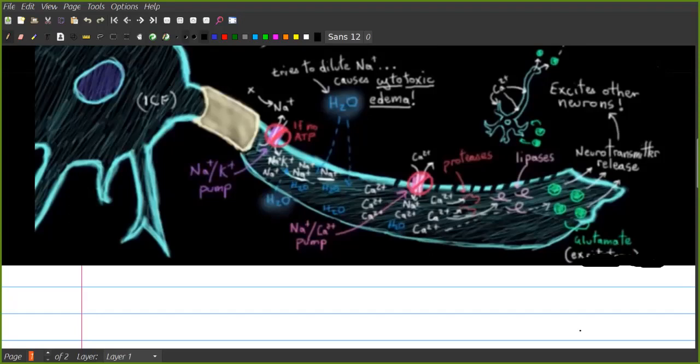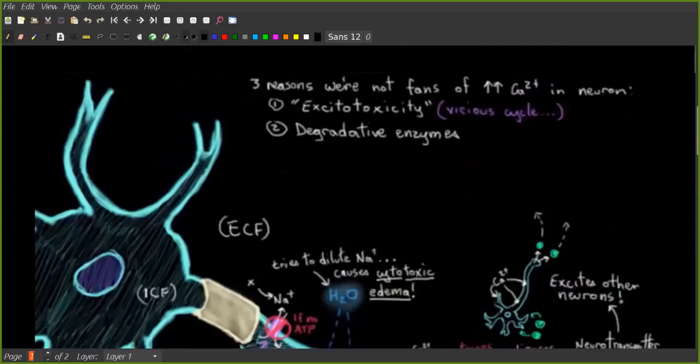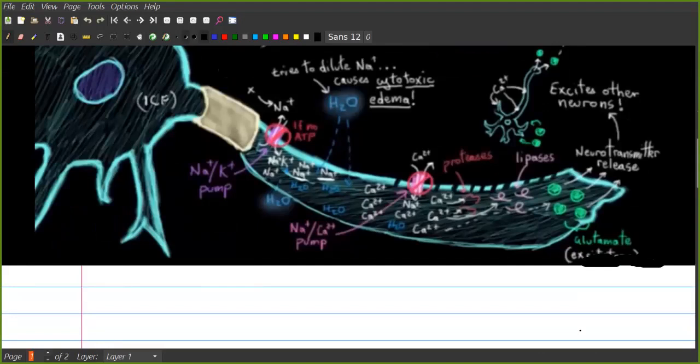Also the calcium cannot go out. So what the calcium does is it makes excitotoxicity because there's a lot, so they make glutamate and it excites other neurons.